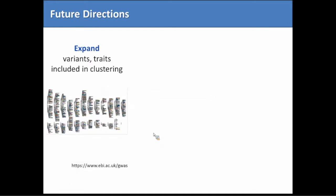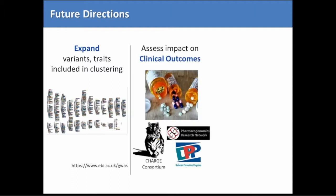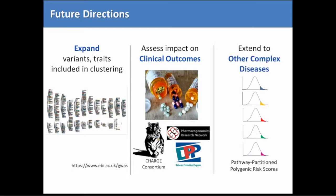In summary: we can use common genetic variation to identify five key pathways causing type 2 diabetes and start to stratify patients into subtypes. Where we're going now is expanding this work — since publication, many more loci have been identified for type 2 diabetes. We can add more traits, and most critically, determine whether it matters: if you can put somebody in a cluster, does that tell you anything about their disease course or response to treatment? This same approach can also be applied to other conditions — PCOS, coronary disease, and really all complex diseases.